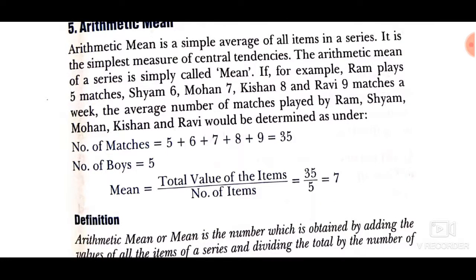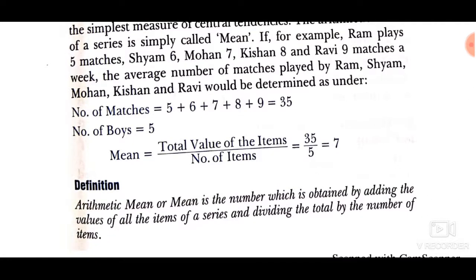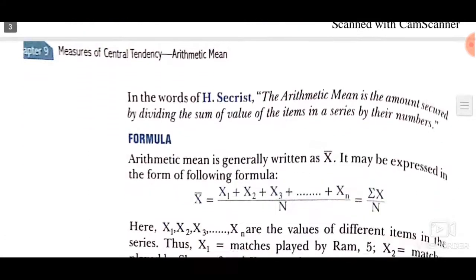How will we calculate the mean? Total value of items divided by number of items. We add everything: five plus six plus seven plus eight plus nine. The total value is 35, and the number of items is 5, so 35 divided by 5 equals 7. That is our arithmetic mean.